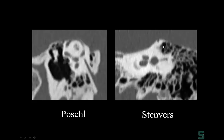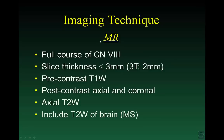All our studies are reconstructed in the Poshels and Stenvers views, which harken back to the days of conventional tomography. What's old is new again — with the understanding that dehiscence of the superior semicircular canal is best seen in planes parallel and orthogonal to it, the Poshels and Stenvers views were rediscovered. Looking for superior semicircular canal dehiscence is one of the common reasons we perform temporal bone CTs.